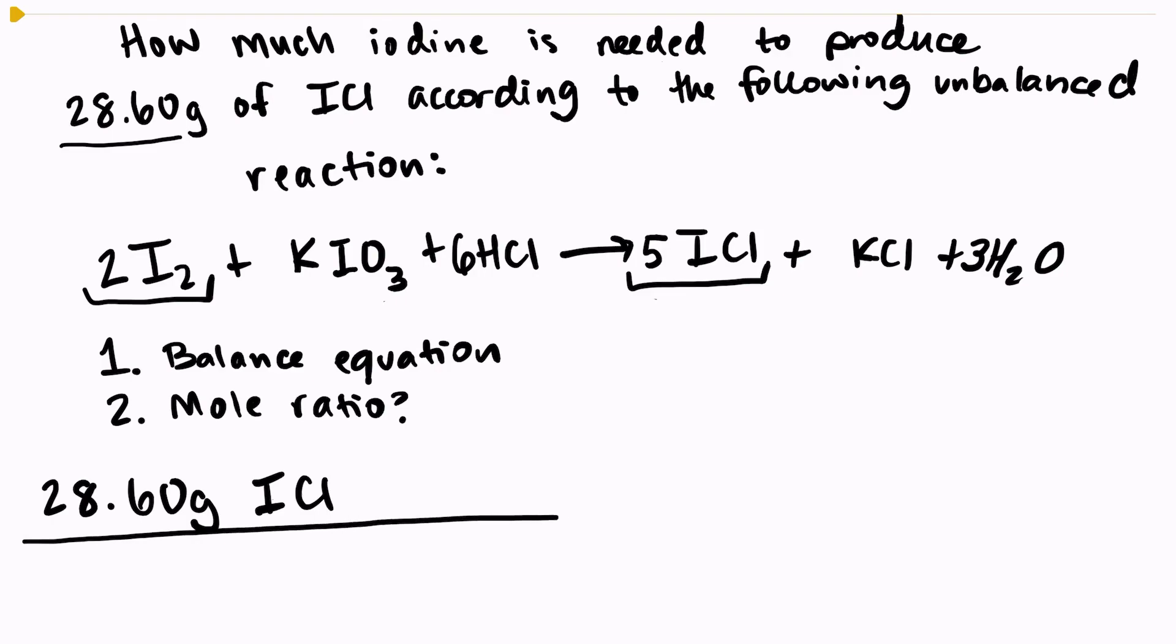So the first thing we're going to do is change our iodine chloride into moles. So I need to know the molar mass of iodine chloride. I look on the periodic table and I see that iodine has a mass of 126.9, chlorine has a mass of 35.45, which gives me a total mass of about 162.4 grams of iodine chloride.